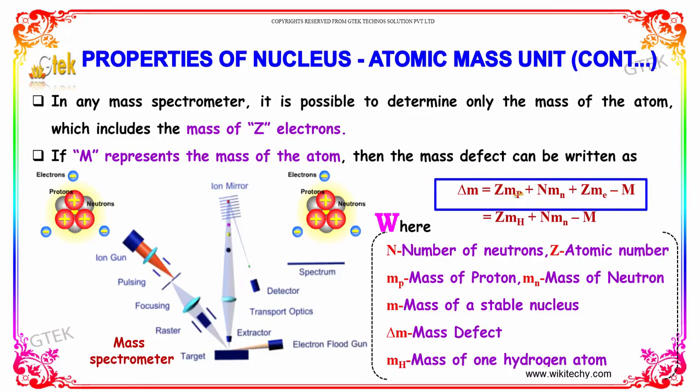Z into mp and z into m can be replaced as z into mh, the atomic number into the mass of one hydrogen atom.